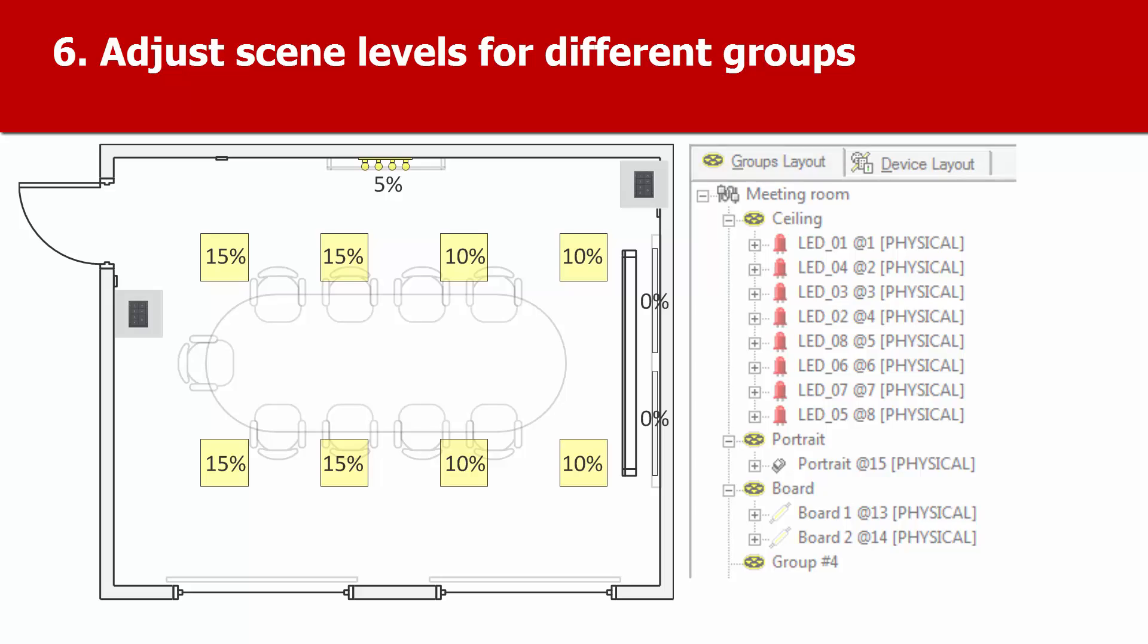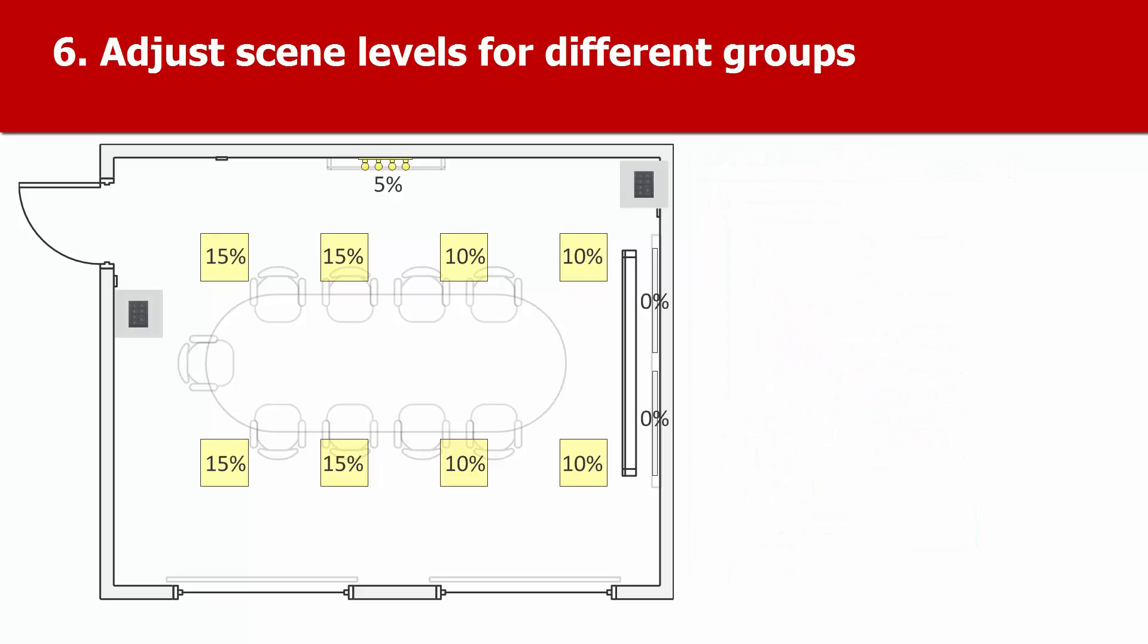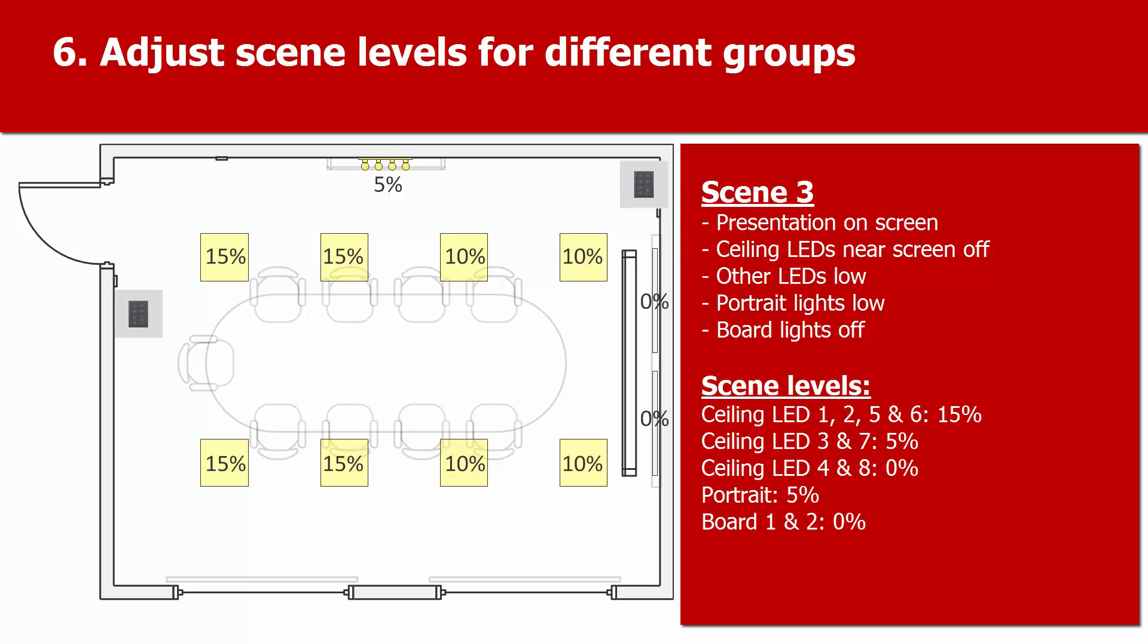What we're going to do is set up a lighting scene that can be used in the meeting room when someone's giving a presentation. The ceiling lights near the screen are off or very low, but at the other end of the table, the lights are on at 15%.